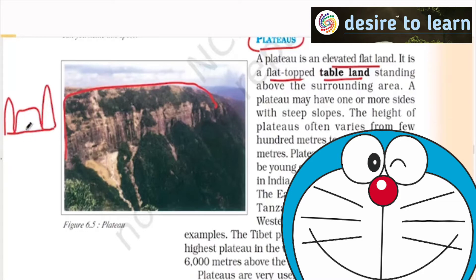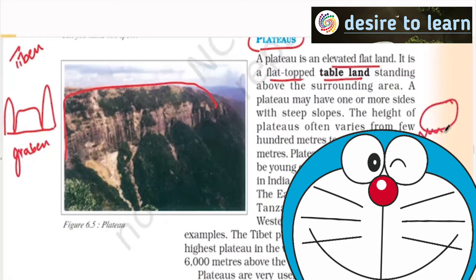I can call this to be Graben as well, sometimes. Tibetan Plateau, if you see, is actually in between the Himalayas and the Kunlunshan mountains. Tibet will be like this — Himalayas here, Kunlunshan mountains here. So when these two were formed, the plateau, or Tibet which was there, it raised above. Compression led to this particular part raising above.